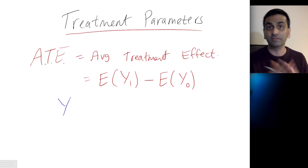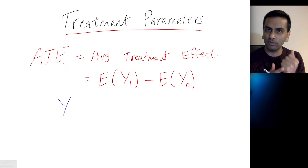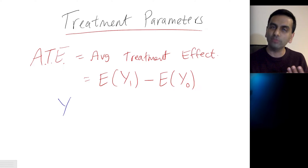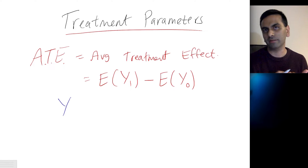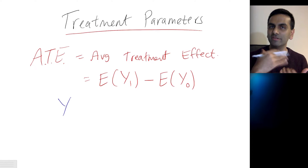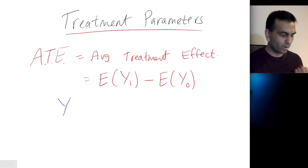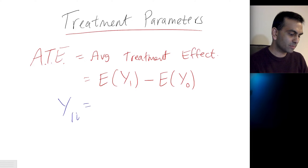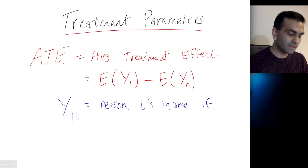The context is there's some variable — to make it easy, let's call it a 0-1 variable. The most common example is whether you have a college degree or not: 1 if you have a college degree, 0 if you don't. What we're after is the causal impact of having a college degree — how much does having a college degree cause your income Y to change? So Y1 for person i is person i's income if they go to college, or more generally, if they get the treatment.